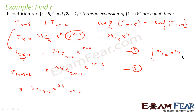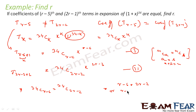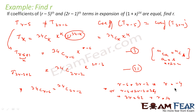When nCa = nCb, either a = b or a + b = n, as we learned in combinations. Applying this: either r - 6 = 2r - 2, giving r = -4 (discarded since r can't be negative), or (r - 6) + (2r - 2) = 34, giving 3r = 42, so r = 14. Therefore r = 14 is the answer.